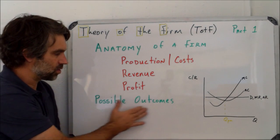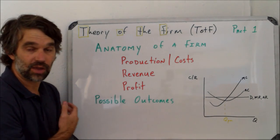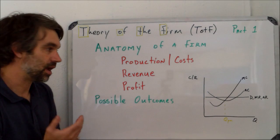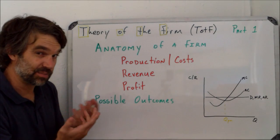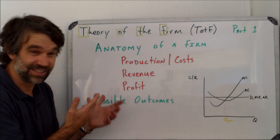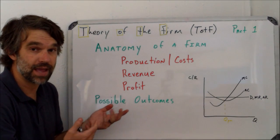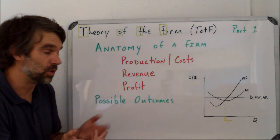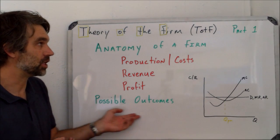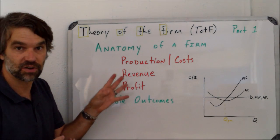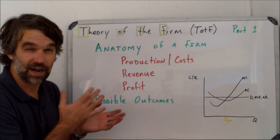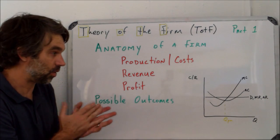In all of that, we're working towards figuring out what are the possible outcomes for a business. Can it profit? Can it profit more than normal? If it's not profiting, what kind of choices can it make? That'll be the conclusion of that first part of Theory of the Firm. You'll see in this a lot of tables, a lot of numbers, a lot of graphs.